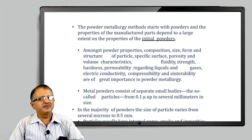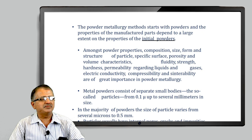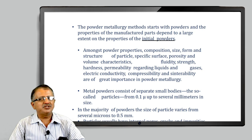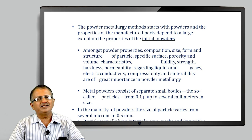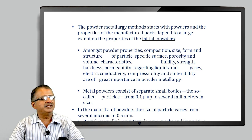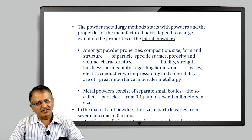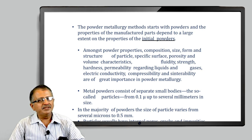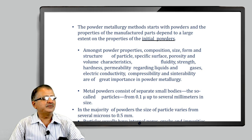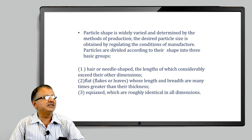The Powder Metallurgy process starts with powder, and powder production is a very key initial step. The properties of powder — its composition, size, form, structure of particle, specific surface, porosity, fluidity, strength, hardness, permeability, compressibility, and sinterability — are of tremendous importance in Powder Metallurgy to achieve the required quality. The size of metal powder, from 1.1 micron to several millimetres, also plays a very important role.